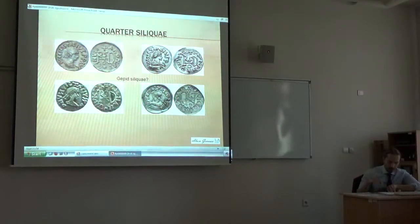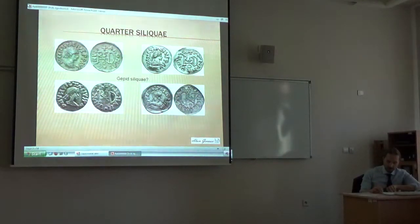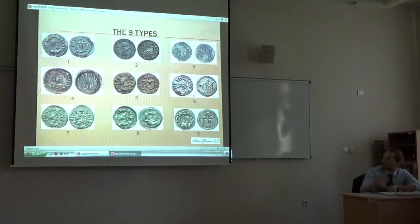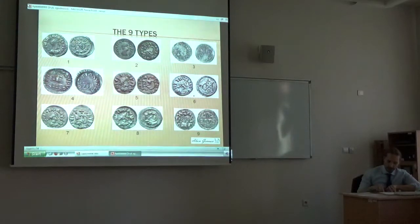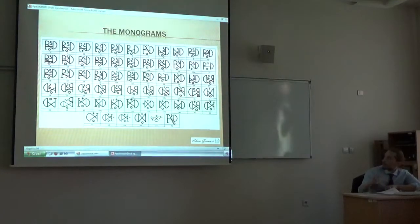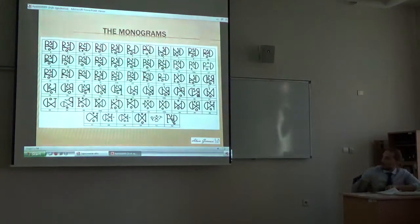This is not surprising because these coins that I call Type 2 represent 70% of the whole group in my database. But working on more than 500 coins, I was able to identify 9 different types that I am going to illustrate briefly to you, and a great number of unrecorded monograms — many of them are unrecorded.